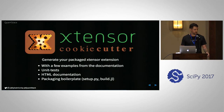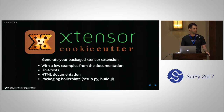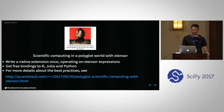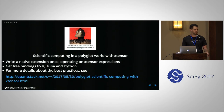If you're not convinced, we provide a cookie cutter project that generates for you an xtensor extension package with examples from the documentation, unit tests, HTML documentation, and all the packaging boilerplate — so you just start from there and tweak it to build your own xtensor-based Python, Julia, or R extension using a very familiar API that is also very fast. If you're interested in best practices for authoring extensions that work for all these languages, we have a blog post called 'Scientific Computing in a Polyglot World with xtensor' that dives into the C++ details.